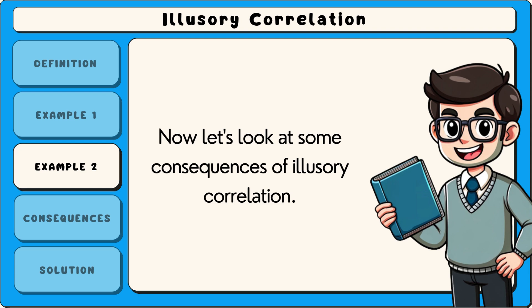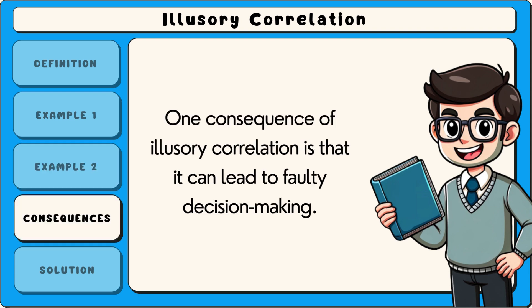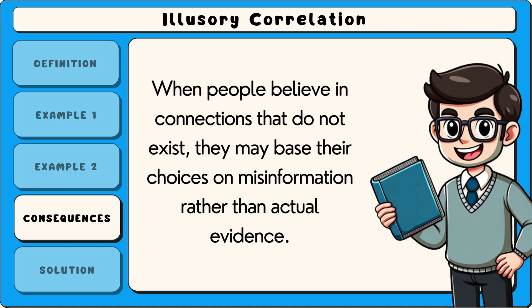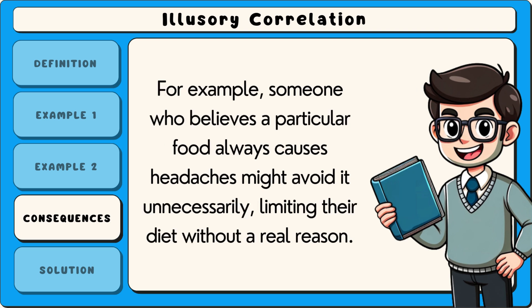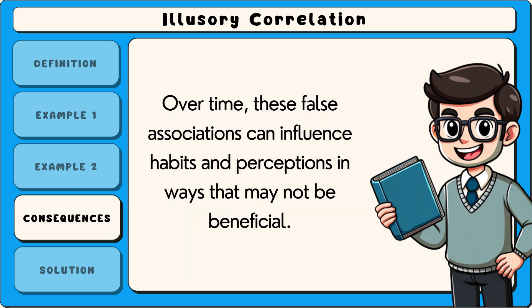One consequence of illusory correlation is that it can lead to faulty decision making. When people believe in connections that do not exist, they may base their choices on misinformation rather than actual evidence. For example, someone who believes a particular food always causes headaches might avoid it unnecessarily, limiting their diet without a real reason. Over time, these false associations can influence habits and perceptions in ways that may not be beneficial.